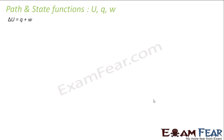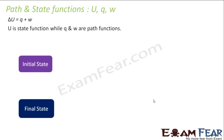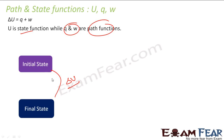So ΔU = Q + W — repeating this because it is the critical equation, the first law of thermodynamics. W here — Q and W are path functions. ΔU depends only on the initial and final states; it doesn't care about the path it follows. But Q and W are path functions — heat is a path function and work done is also a path function.